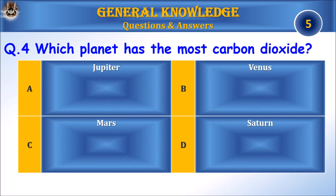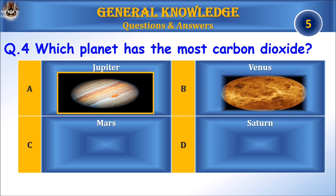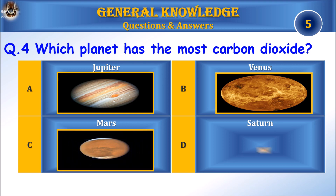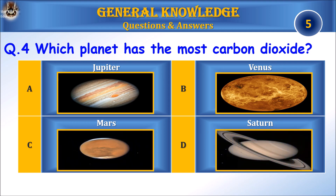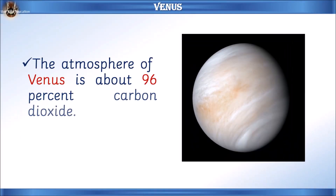Question 4: Which planet has the most carbon dioxide? A) Jupiter, B) Venus, C) Mars, or D) Saturn. Answer: B) Venus. Let's learn some facts — the atmosphere of Venus is about 96% carbon dioxide.